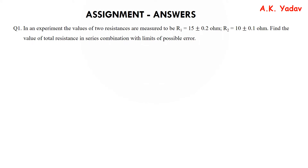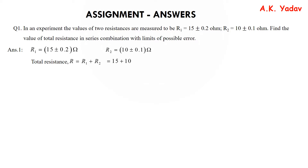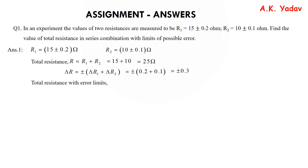Question 1: In an experiment the values of resistances are given. R1 = 15 ± 0.2 ohm, R2 = 10 ± 0.1 ohm. We need to find the total resistance in series with limits of possible error. Total resistance R = R1 + R2 = 15 + 10 = 25 ohms. For the error: delta R = ±(delta R1 + delta R2) = ±(0.2 + 0.1) = ±0.3. So the total resistance with error limits is 25 ± 0.3 ohms.